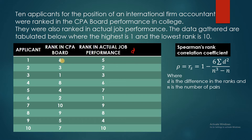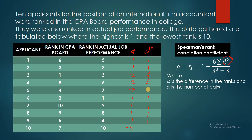This is now the column D. Taking the differences: 6 minus 5 is 1; 3 minus 2 is 1; 1 minus 3 is negative 2; 8 minus 6 is 2; 4 minus 7 is negative 3; 2 minus 1 is 1; 10 minus 9 is 1; 9 minus 8 is 1; 5 minus 4 is 1; and 7 minus 10 is negative 3. What we need in the formula is D squared. Squaring each: 1 squared is 1 for all the ones; negative 2 squared is positive 4; 2 squared is positive 4; and negative 3 squared is positive 9. We then take the summation of D squared, and the sum is exactly 32.